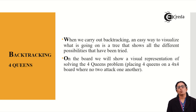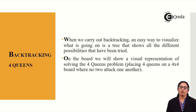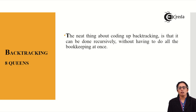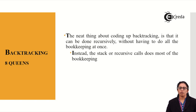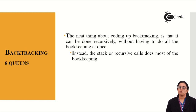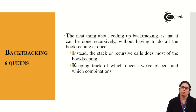This tree visualization shows a possibility for backtracking with four queens — placing four queens on a 4x4 chessboard where no two attack each other. The neat thing about backtracking is that it can be done recursively without having to do all the bookkeeping at once. We keep track of everything using the stack or recursive calls, which does most of the bookkeeping work. This recursion leads to systematic behavior, tracking which queens have been placed and which combinations have been tried.